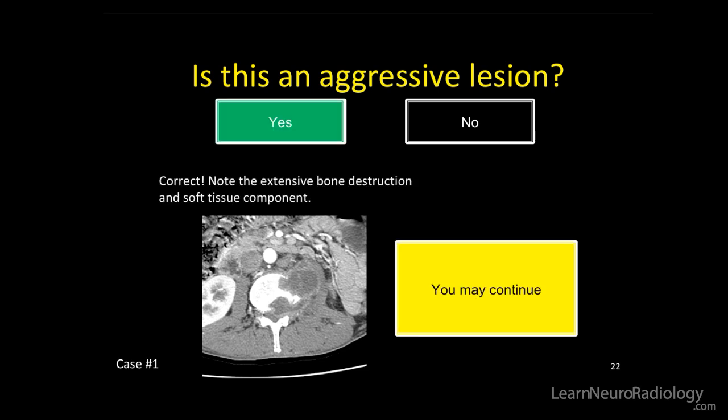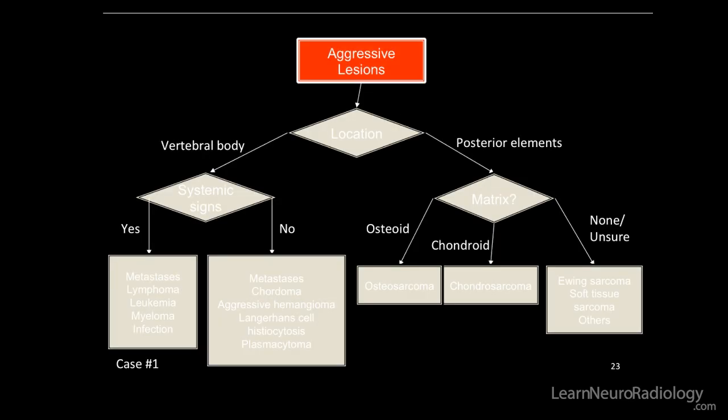It's an aggressive lesion. There's extensive bone destruction along the posterior and lateral margin on the left, and there's also an extra-osseous soft tissue component.